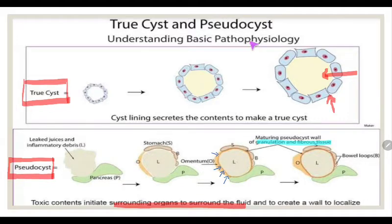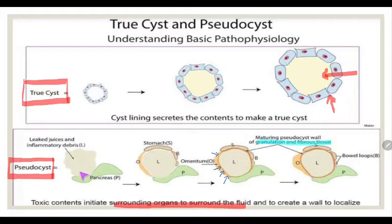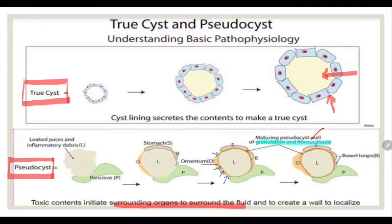In the basic pathophysiology, a true cyst has an epithelial lining which produces secretion. In the case of a pseudo-cyst of the pancreas, pancreatic fluid leaks out. This is an inflammatory fluid that initiates inflammation. In the abdomen, the omentum and surrounding bowel and stomach encircle this fluid. This causes granulation and fibrous tissue to form, which delimits the fluid into a limited area — this is the pseudo-cyst.